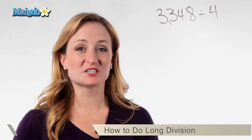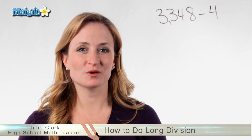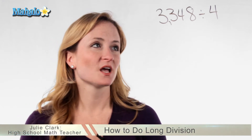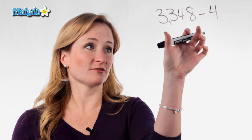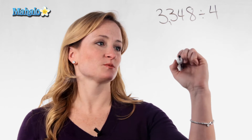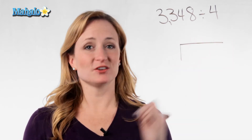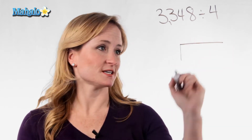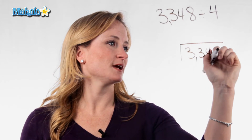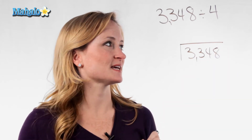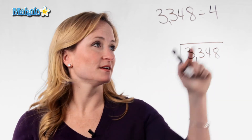Hi, this is Julie with Mahalo.com and today we're going to do long division. We're going to divide 3,348 divided by 4. The first step is making sure you set it up correctly. Your first number is what actually goes inside your long division sign, so we're going to put 3,348 on the inside, which is actually the dividend.